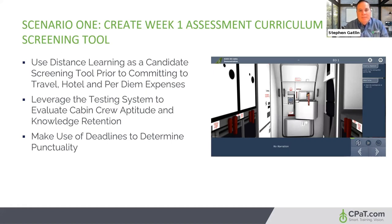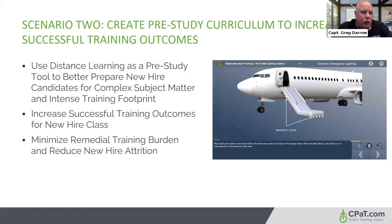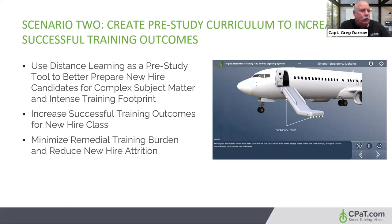Now let's look at Scenario Two — for airlines that don't want to use this as a screening tool, but want to give candidates as much chance to succeed when they show up at a very complex and intense training course. By providing pre-study material — a week of content they can study on their own time at no cost to the airline — you give them a chance to get ahead of more complex material. Can you describe how airlines do that and what benefits play out?